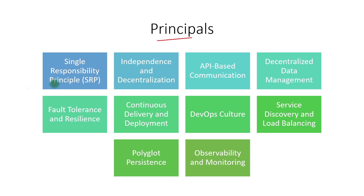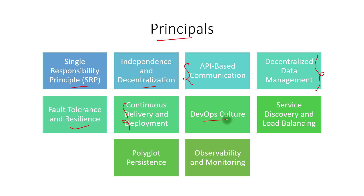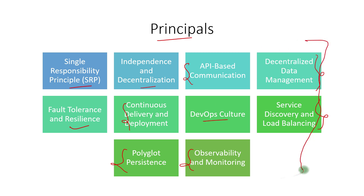We can group the principles and best practices under 10 points. First is the single responsibility principle. Second is independence and decentralization. Then API-based communication, decentralized data management, fault tolerance and resiliency, continuous delivery and deployment (CI/CD), DevOps culture, service discovery and load balancing, polyglot persistence, and observability and monitoring. These are the 10 thumb rules or principles that should be followed for the best possible microservices architecture.